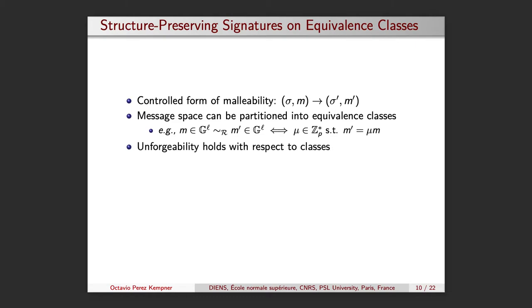Unforgeability holds with respect to classes. No adversary should be able to update a signature and obtain a new one for a message that is not in the same class. In other words, switching representatives in a class is no longer seen as an attack but rather as an advantage of the scheme, and the only allowed form of malleability.